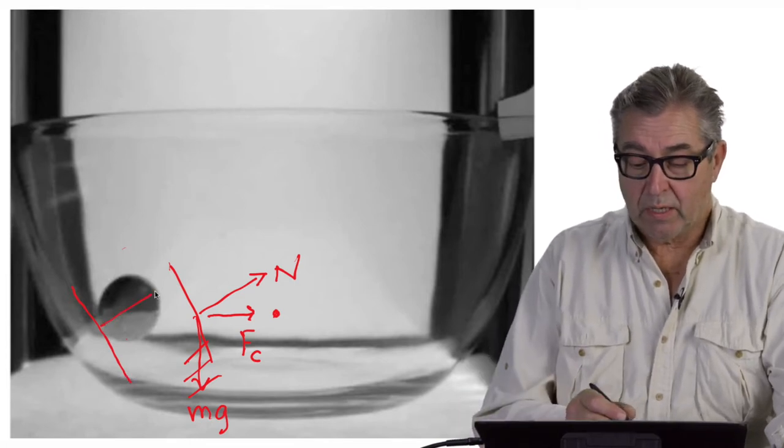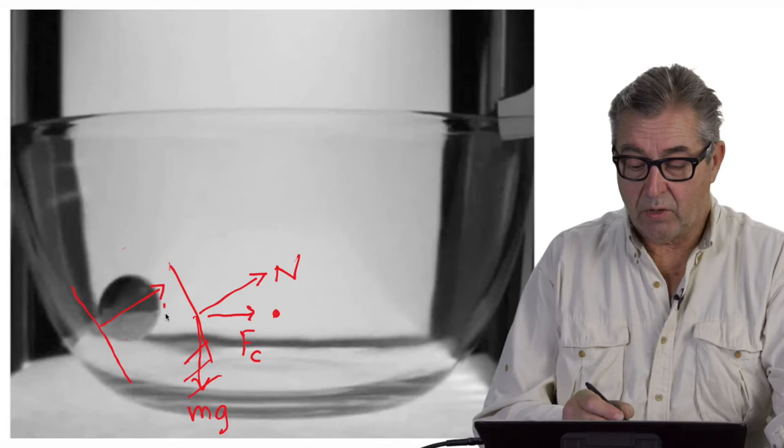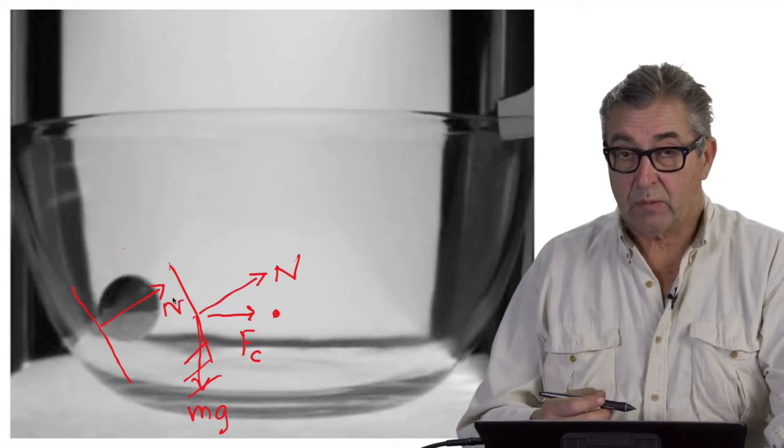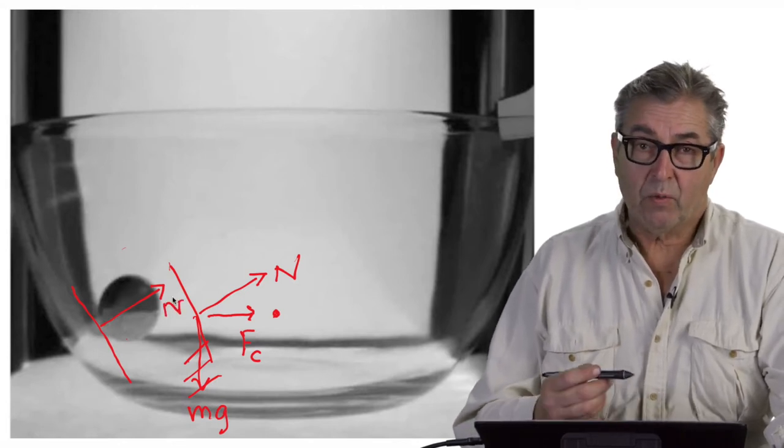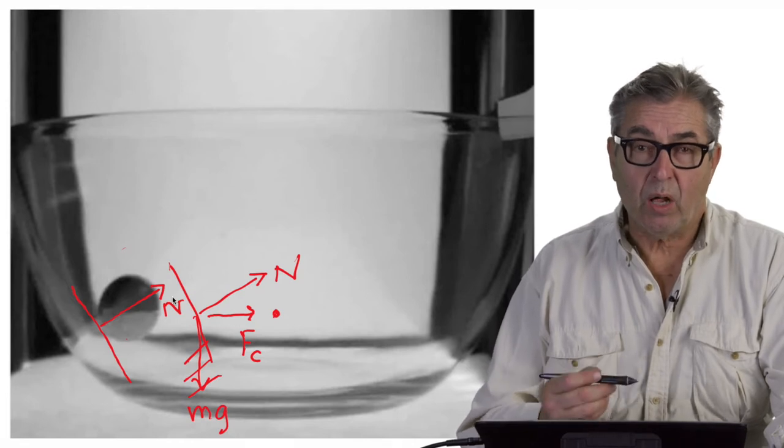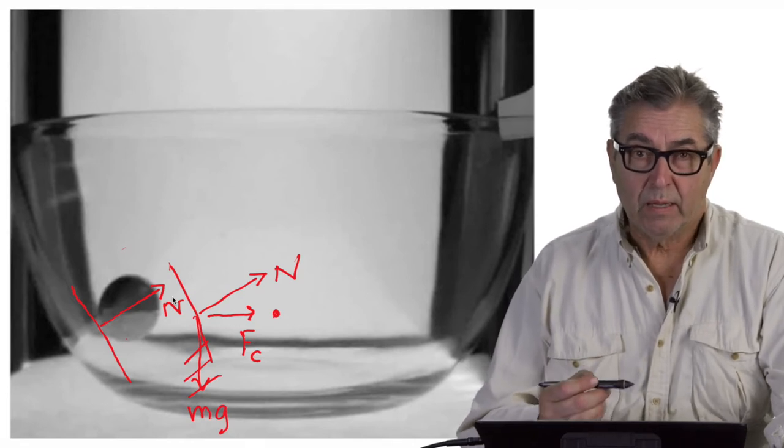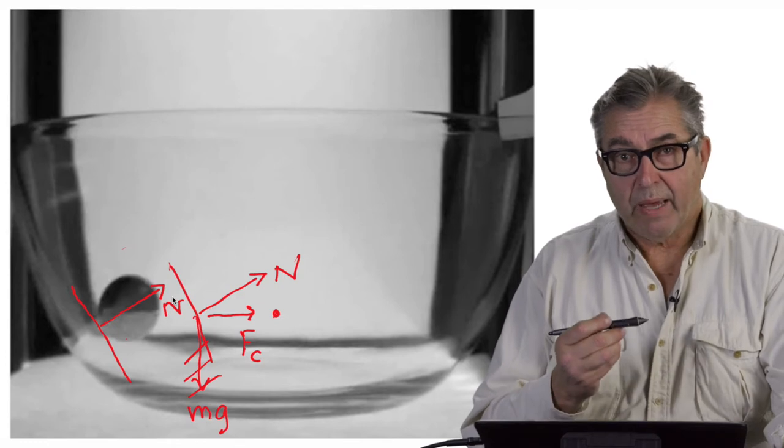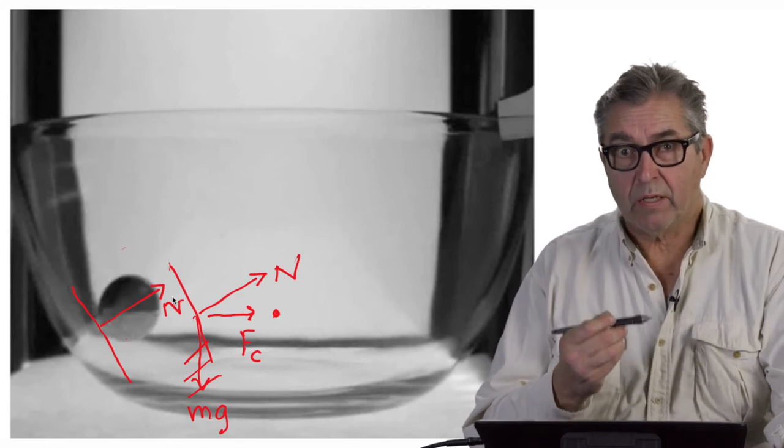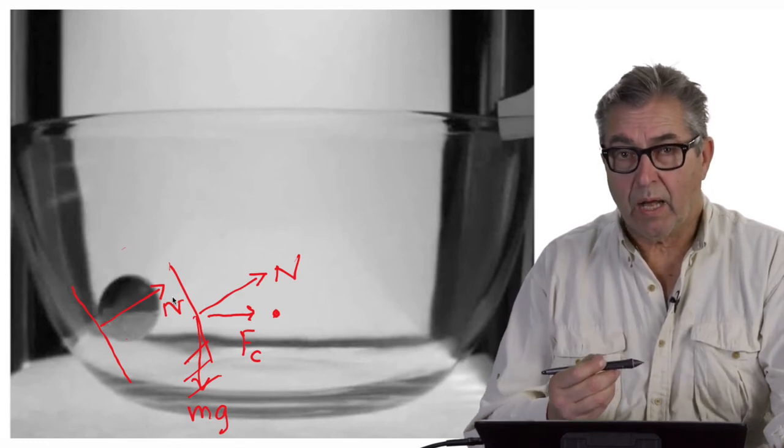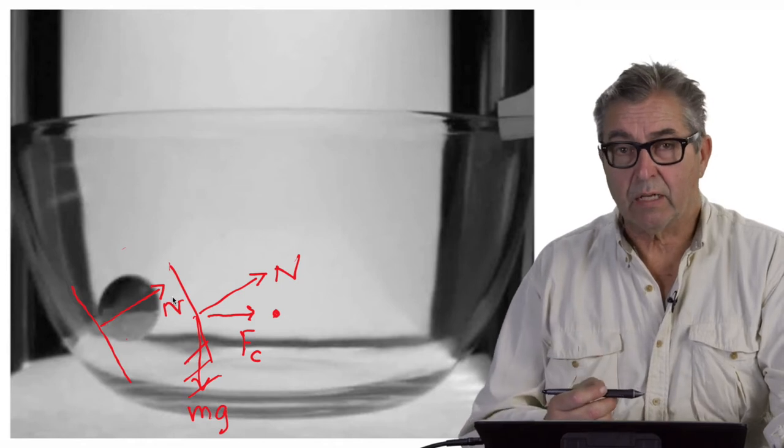The answer is yes, there still is a normal force of the glass pushing on the ball, and the reason is because the ball has inertia. The inertia of the ball makes the ball want to go in a straight line, but it cannot because it's inside of the glass bowl.